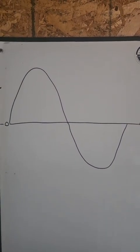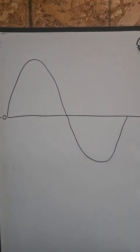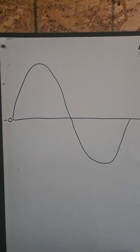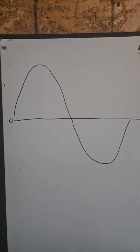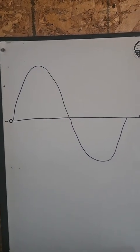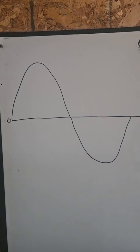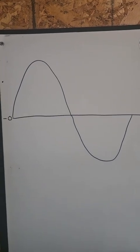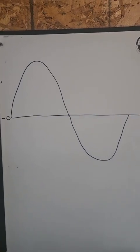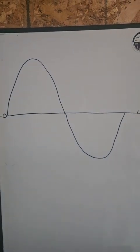That sine wave represents the changing voltage of an AC circuit. So the question is, if that's a 120 volt circuit, where's 120 volts on that sine wave? And what does it mean if we call it 120 volts even though it's a bunch of varying voltages?